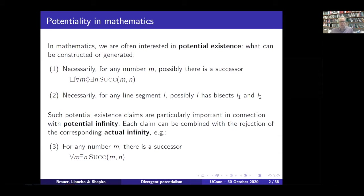Potential existence is of course very closely connected to potential infinity. If you're a defender of potential infinity, then you will accept one or two while rejecting the corresponding claim you would get by deleting the modal operators. So for instance, you would reject three — the claim that for any number there in fact is a successor. An instance of potential infinity would then be one plus the negation of three.